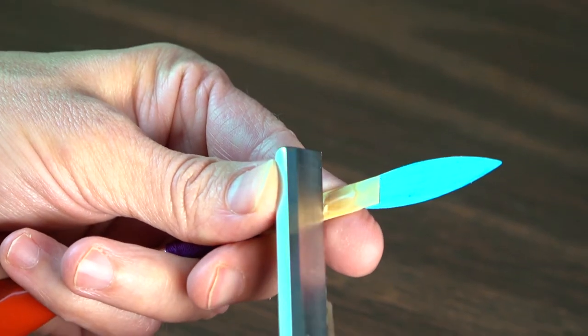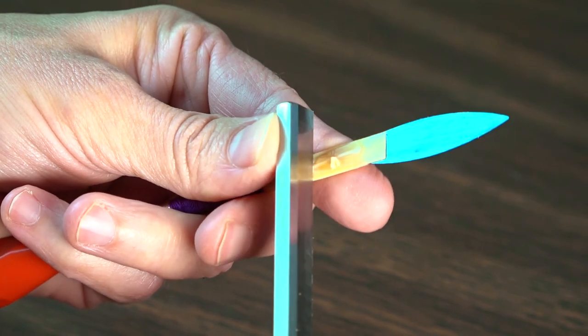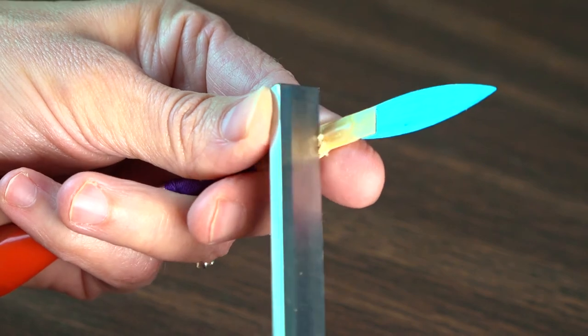Start scraping just below the 46 to 47 millimeter mark and scrape up to your score mark. Each scrape you make should start a little further back on the window, scraping up to the mark.